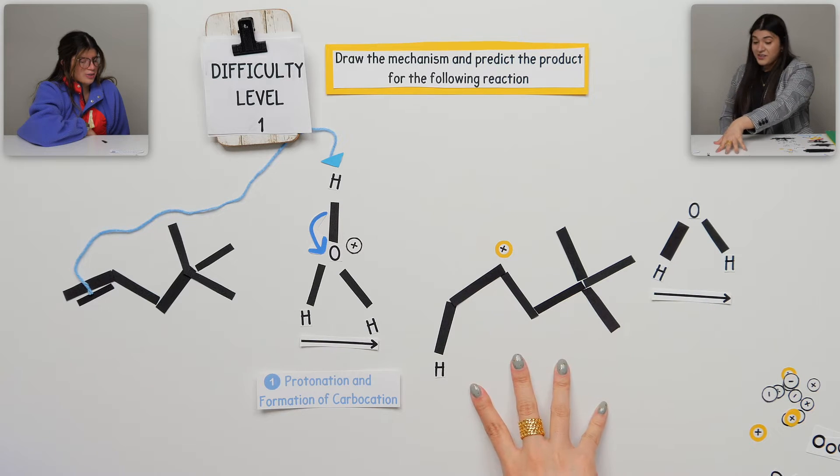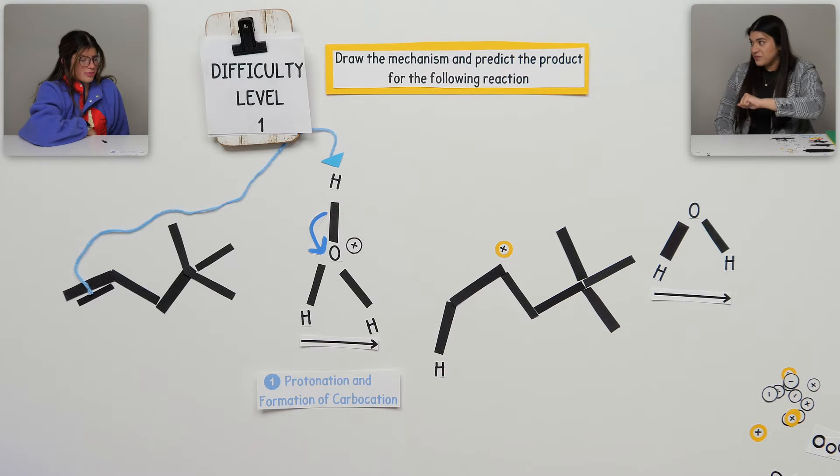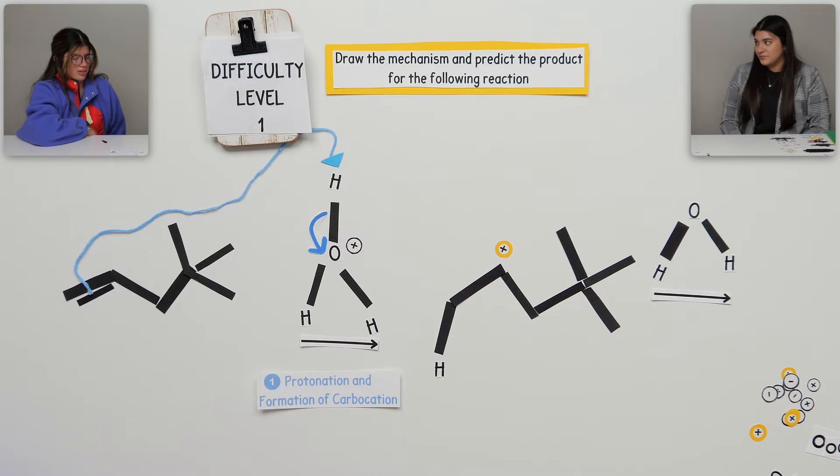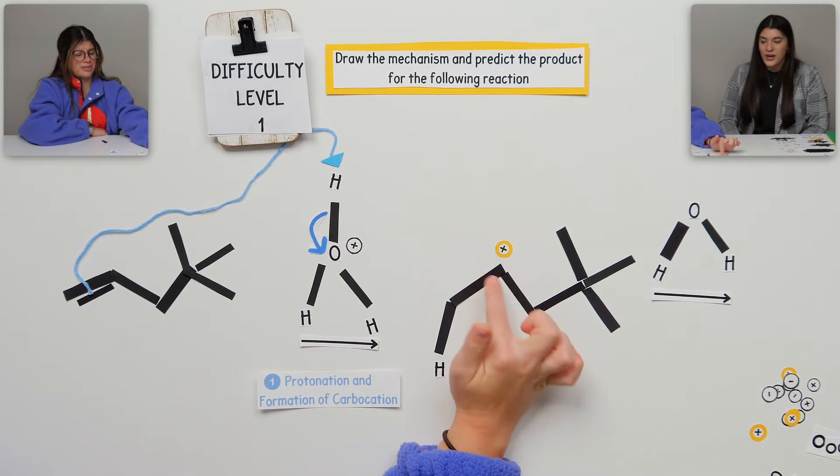So now that we have our carbocation, we have our water, it's the same sort of thing. Nucleophile, electrophile. It's going to go nucleophile to electrophile. What's our nucleophile? The nucleophile would be this right here. Good. What's our electrophile? This. Carbocation. Yep.